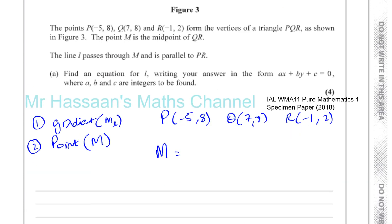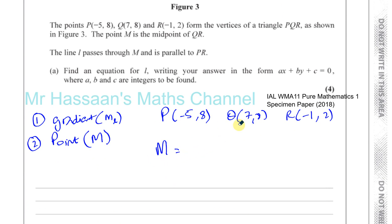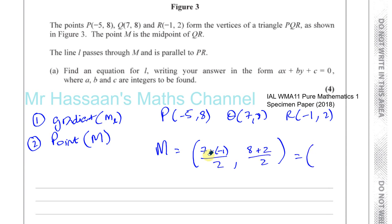The midpoint of QR is found by averaging the x and y coordinates. So we have (7 + (−1)) / 2 and (8 + 2) / 2, giving us 6/2 = 3 and 10/2 = 5. So the midpoint M is (3, 5).